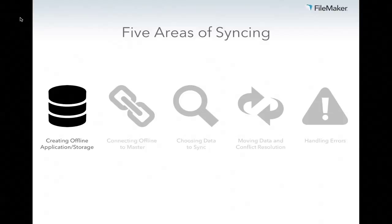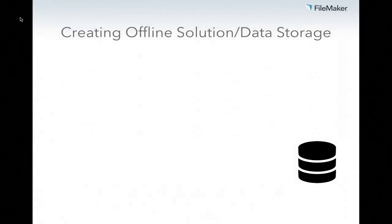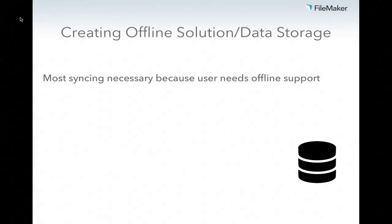I'm going to go through the five different areas, talk about what they mean, ask questions you might want to ask yourself, and give use cases of different people that have solved these in different ways. First, we start with creating an offline application and having some sort of offline data storage. A lot of times when people say 'syncing,' what they really mean is some sort of partial, occasional offline support — users occasionally need to be offline, and you still want them to have access to your data.